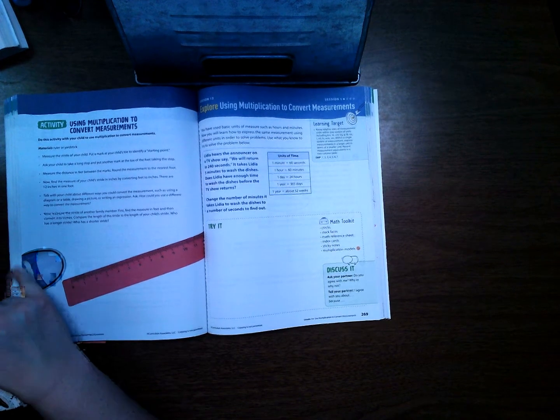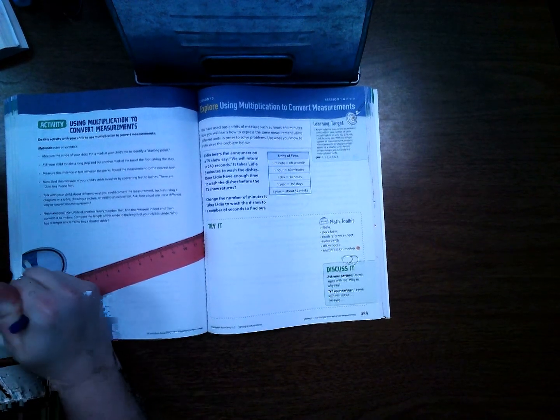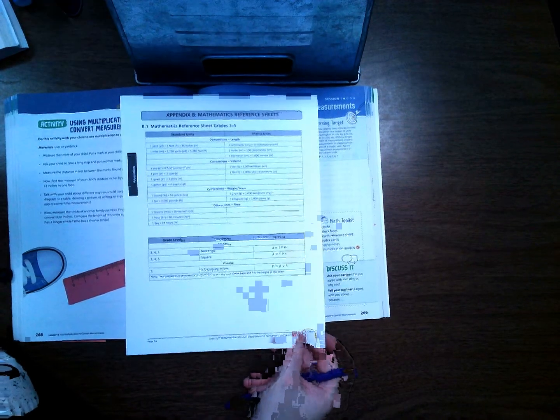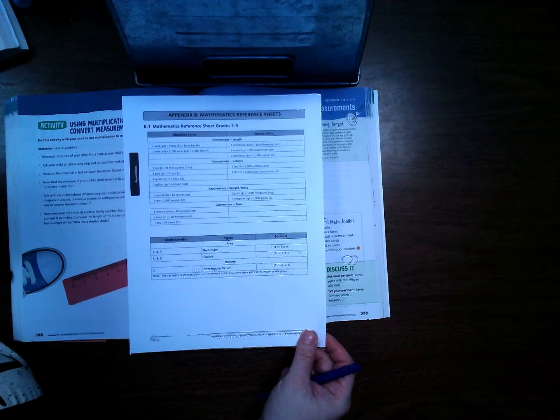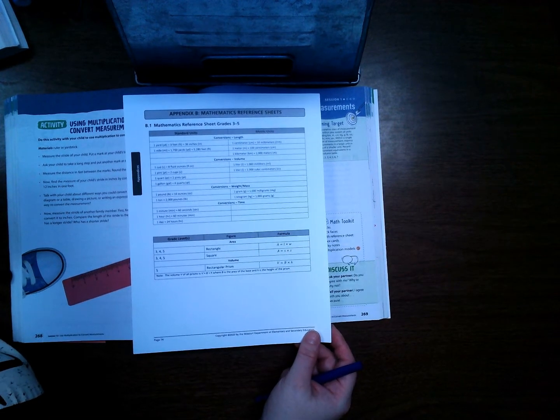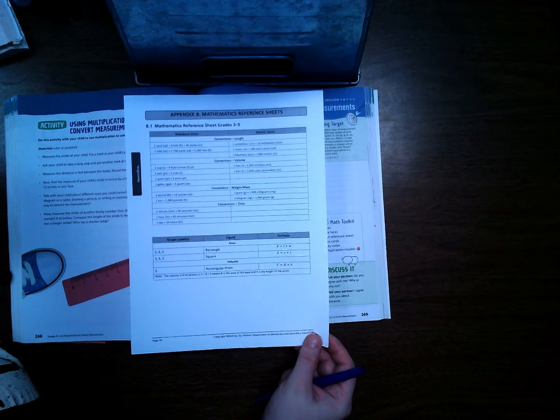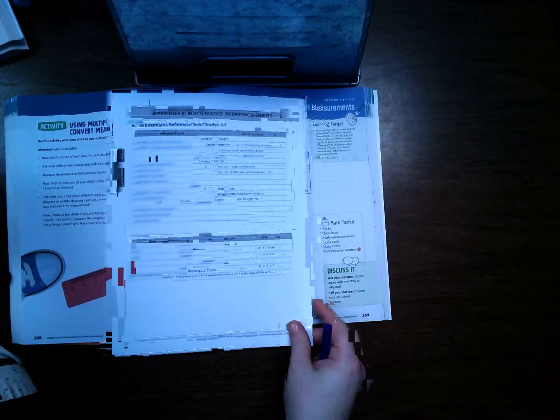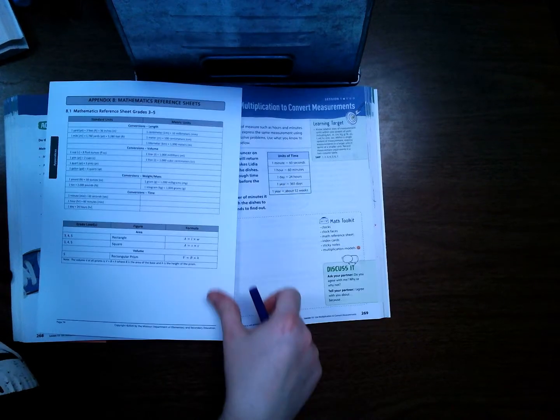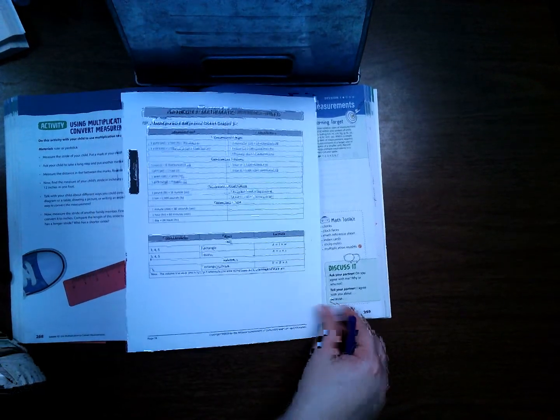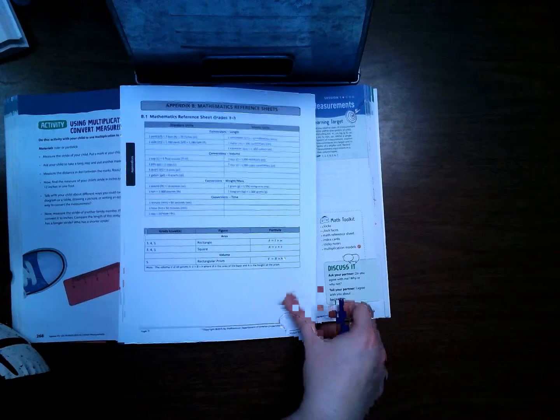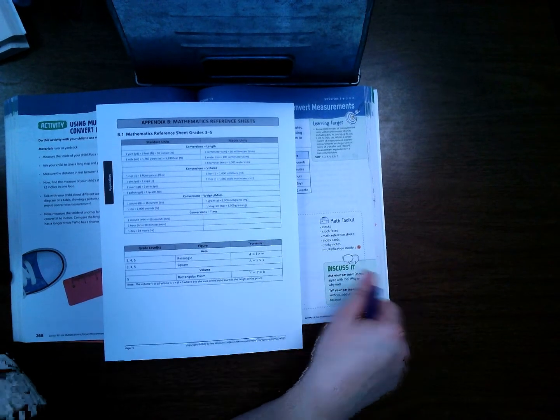But we are going to be on page 269, working on lesson 13 session 1, using multiplication to convert measurements. You also should get out this reference sheet, and this is the reference sheet that when we go to take the MAP test in here in a month or so that you will use. You can use this for anything. Our book will typically give us a measurement chart for everything that we do, but I want you to get into the habit of using this. It's on the back of your decimals, so find this because this is what we're going to be using to get practice with it.